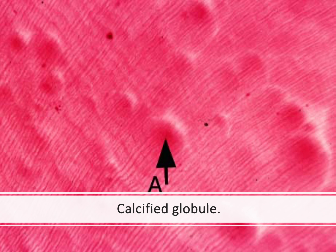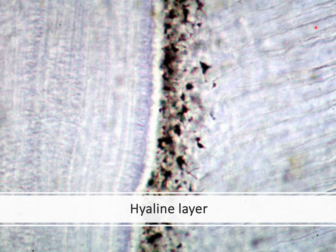Those were the first layers in the crown — the mantle dentine and interglobular dentine. When we go to the root, now that you are familiar with the dentinal tubule shape, you can identify the dentine. You will learn in later sessions that this is the cementum, with its special incremental lines. So here we have dentine and cementum, and between them there is a clear thin layer — the hyaline layer — which replaces mantle dentine in the root.